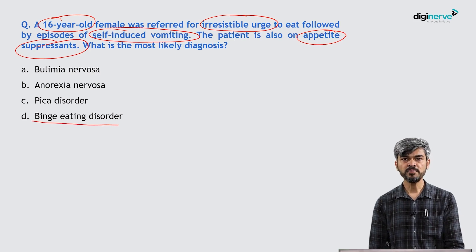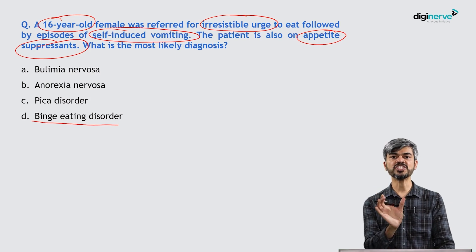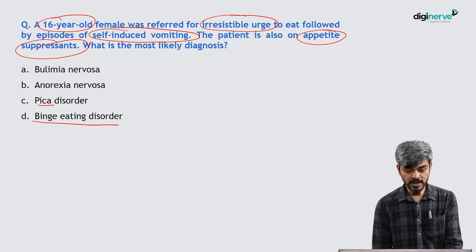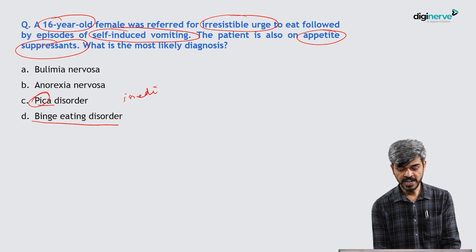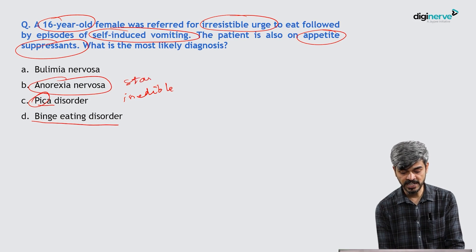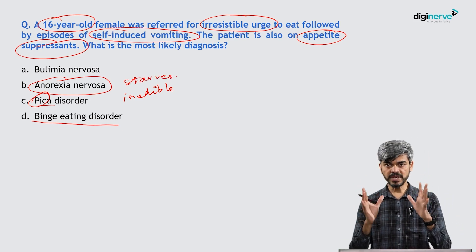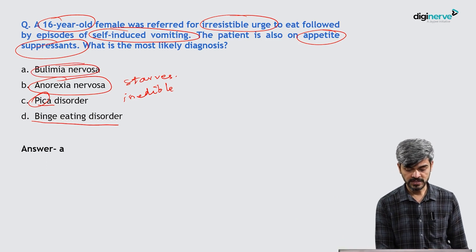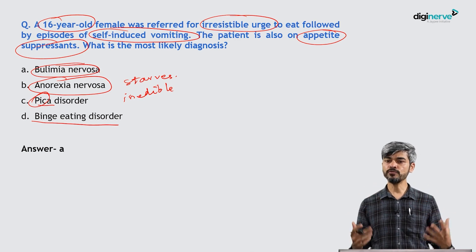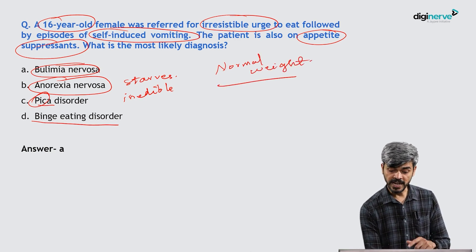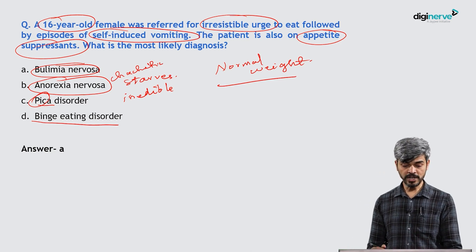In binge eating disorder, the person eats heavily in binges and develops guilt, but without purging. Pica is eating inedible stuff like paint or chalk. Anorexia nervosa is where an individual starves themselves, restricting calories, becoming cachectic while still thinking they are getting fat. The answer here is bulimia nervosa — irresistible craving to eat followed by purging. Unlike anorexia nervosa where individuals lose a lot of weight and become cachectic, in bulimia nervosa the individual maintains normal weight.